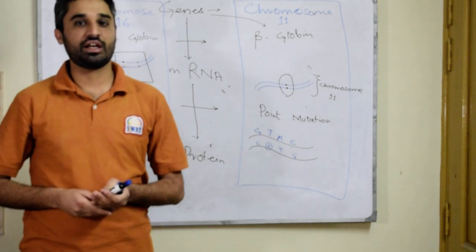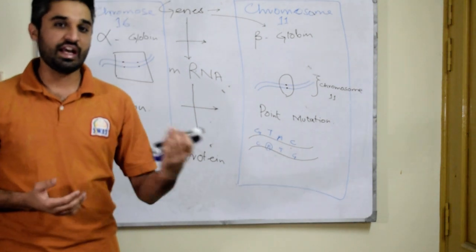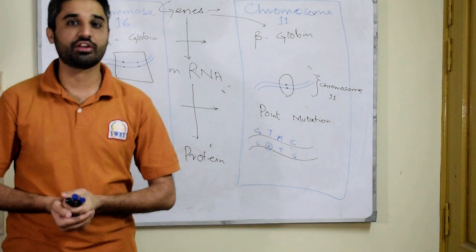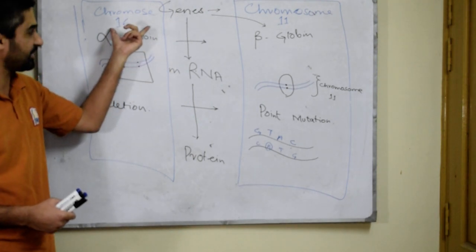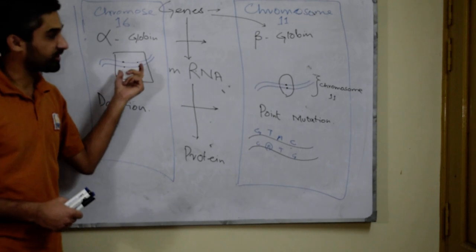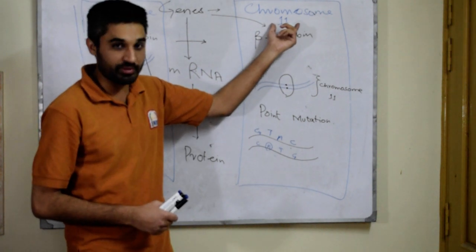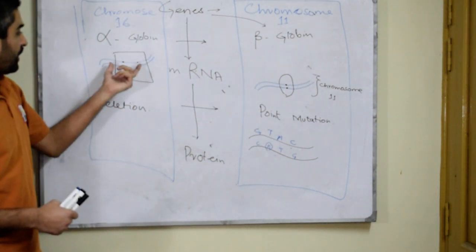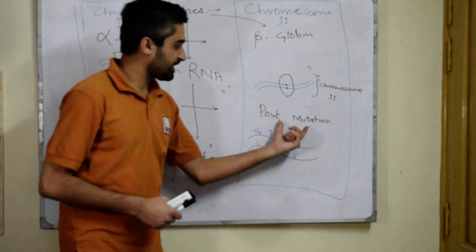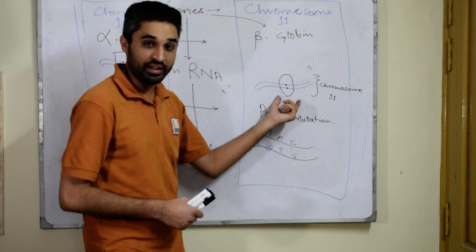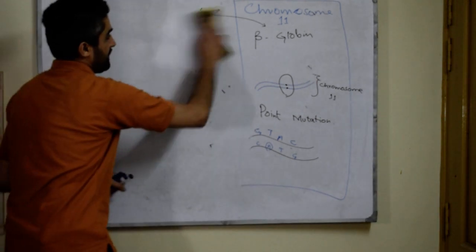So we come to the conclusion that thalassemia is a hereditary hemolytic disease in which there is defective synthesis of either alpha or beta globin chains. Alpha globin genes are present on chromosome number 16 — there are 4 such genes. Beta globin genes are present on chromosome number 11 — there are 2 such genes. The common mutation leading to alpha thalassemia is deletion mutation, and the common mutation leading to beta thalassemia is point mutation.